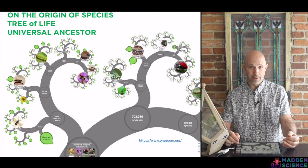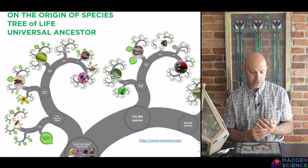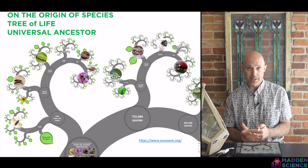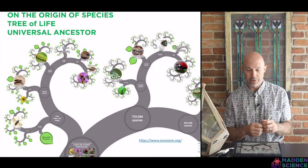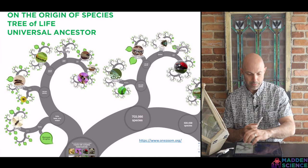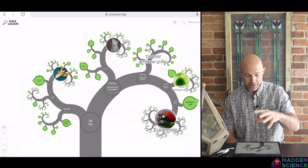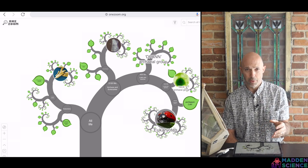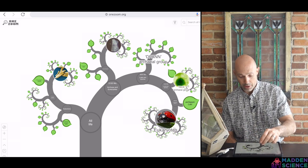Here we get into the tree of life. It was Darwin's goal to observe and make commentary on the origin of species — how is it that new species come about? How is it that we can model and see the tree of life and see a universal ancestry? This website, onezoom.com, is awesome. It's pretty interactive — you see the fractal nature of a tree of life here, broken apart with archaea, bacteria, and eukaryotes.